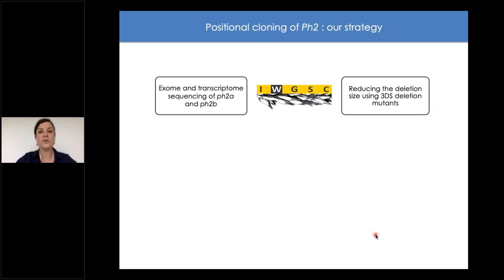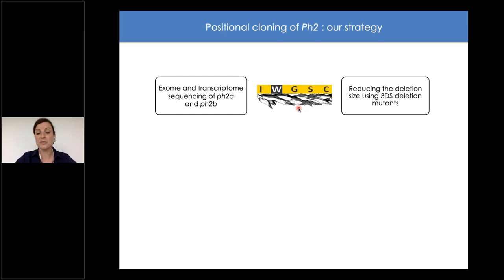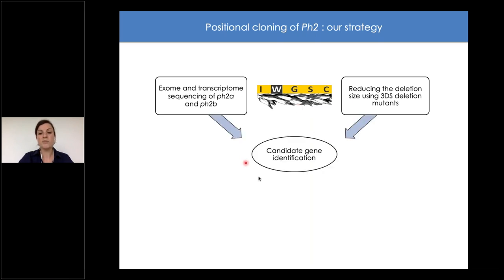When I joined the Sourdille laboratory, the main goal of my postdoc was to perform the positional cloning of PH2. We had two complementary strategies: first, in-depth characterization of the two known mutants using exome and transcriptome sequencing; and second, reducing the size of the deletion to precisely locate PH2 on chromosome 3D using deletion mutants. Both strategies were made possible by the availability of the wheat reference genome.